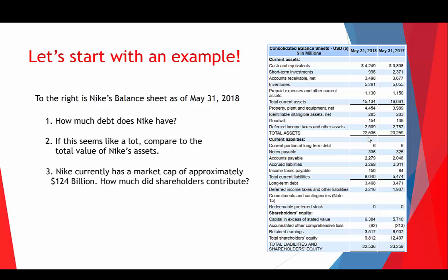In the last video we talked about Apple being the most valuable company in the world with a market cap of nearly a trillion dollars, so just another example of where Nike's at. If you look on the balance sheet in the shareholders equity section at 'capital in excess of stated value' — what that is is the amounts that shareholders have contributed to the business — shareholders have contributed 6.4 billion dollars and now their shares are worth 124 billion.